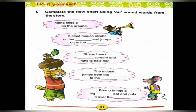This is the first exercise: Complete the flowchart using OU sound words from the story. From the story you have to write OU sound words. Now I will read the sentence — what OU sound word do you have to write in the fill in the blank? First one: Mona finds a dash on the ground. Think children. Pouch. Mona finds a pouch on the ground.